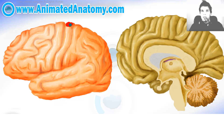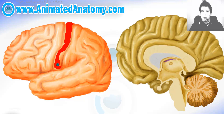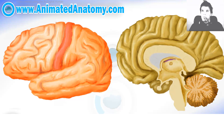We have the primary sensory cortex here on the post-central gyrus. This cortex is important for receiving the signal from receptors all over the body. On the medial side of the brain you can still notice that part of the cortex here.